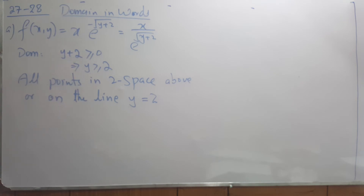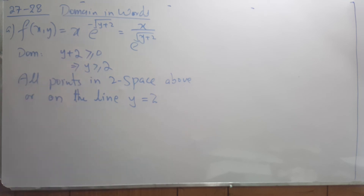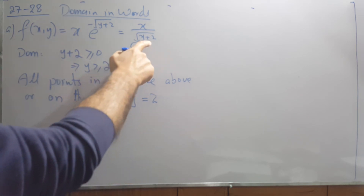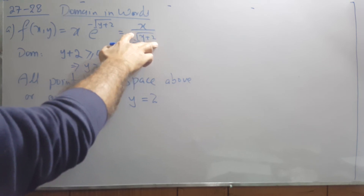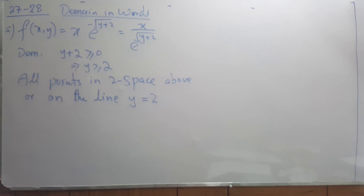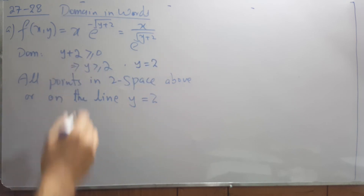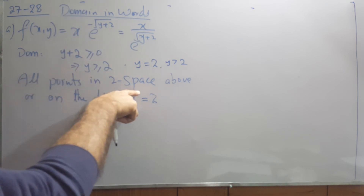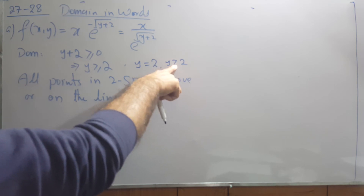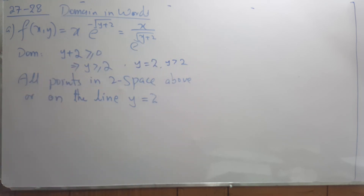In question 27, the function is x·e^(−√(y+2)), which we can write as x divided by e^(√(y+2)). The domain requires y + 2 ≥ 0, since the expression inside the square root must be zero or positive, which means y ≥ −2. In words: all points in the xy-plane on or above the line y = −2.